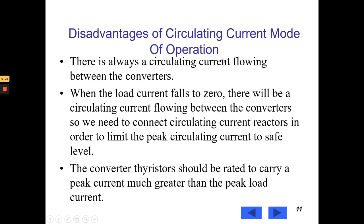Now, we will see disadvantages of circulating current mode of operation. There is always a circulating current flowing between the converters. When the load current falls to zero, there will be a circulating current flowing between the converters. So we need to connect circulating current reactors in order to limit the peak circulating current to safe level.